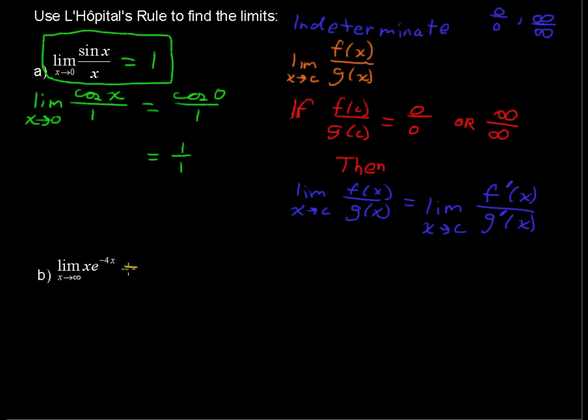This is indeterminate form because this actually equals limit as x approaches infinity of x over e to the 4x. What I did there is I made it a fraction because e to the negative 4x is the same as 1 over e to the positive 4x. So that is legal, what I did there. Now we have, if we plugged in infinity, we would have infinity over infinity. And that is this indeterminate form. So we're going to play this game. We're going to use L'Hôpital's rule right here.